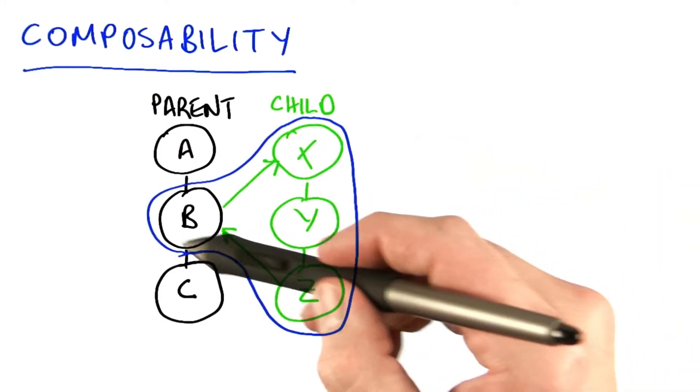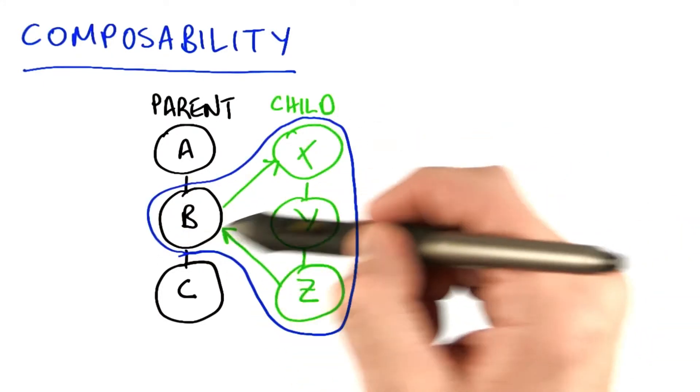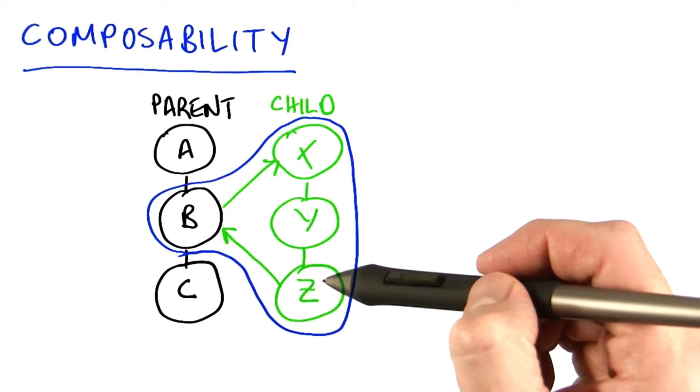So in effect, B actually looks like a single kernel, even though internally, it's doing all of these other steps.